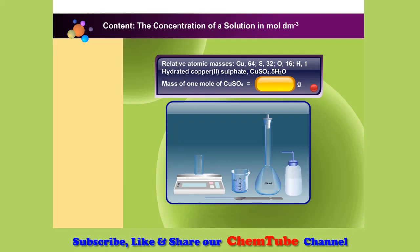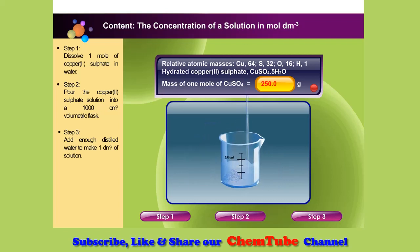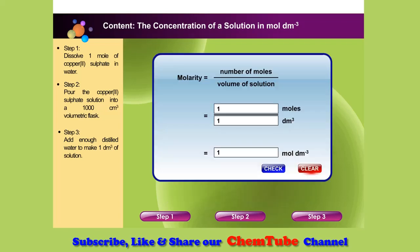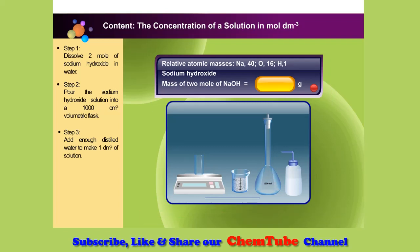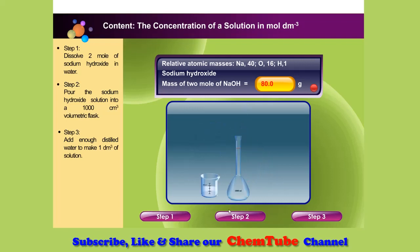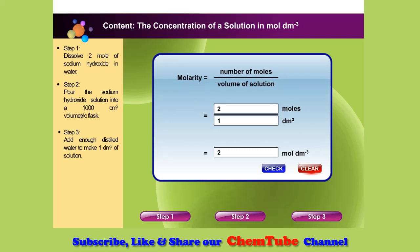Chemists find it more useful to measure concentration of solutions in moles per litre or moles per cubic decimetre. The molarity of the copper 2 sulphate solution you have just prepared is 1 mole per cubic decimetre. Now let us prepare a known concentration of sodium hydroxide solution using 2 moles of sodium hydroxide. The concentration of the sodium hydroxide solution you have prepared is 2 moles per cubic decimetre.